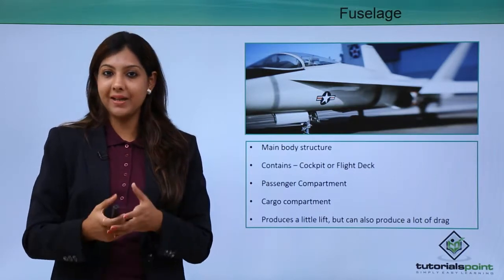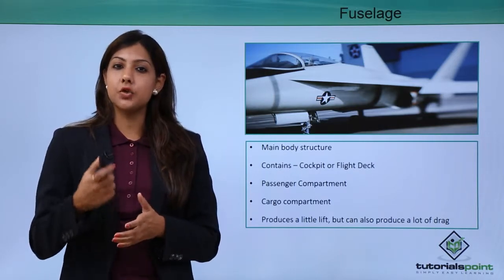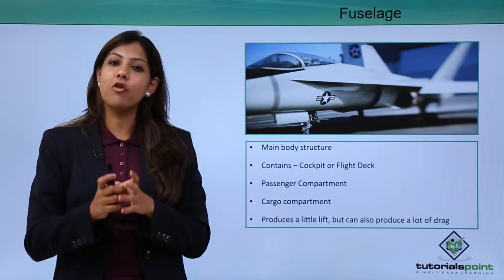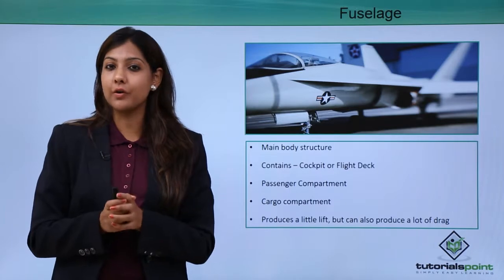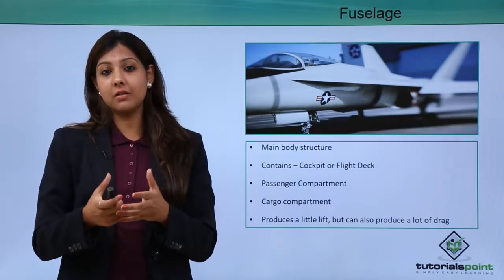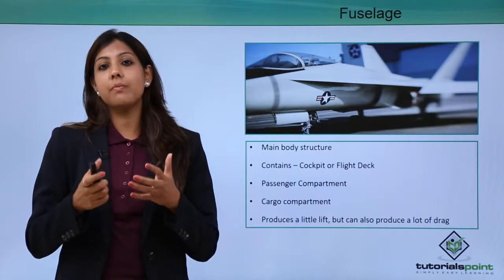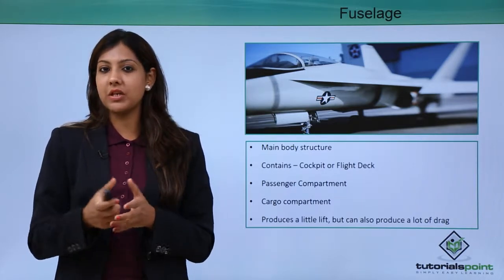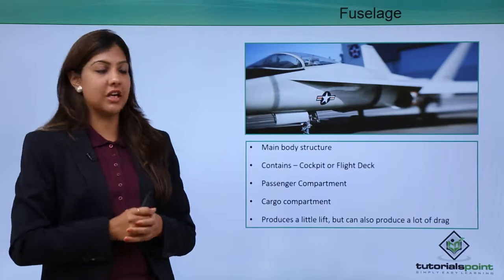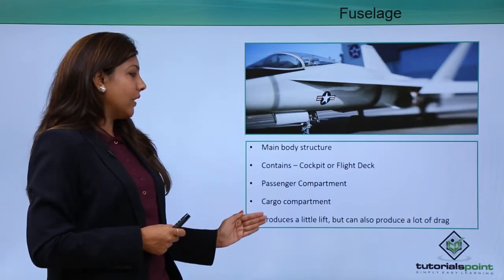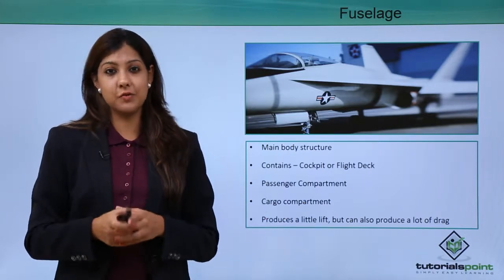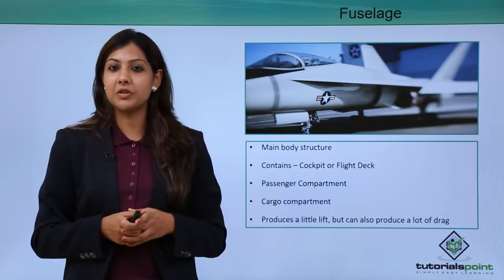In case a passenger wants to carry a pet — like a dog, cat, parrot, or rabbit — all pets are carried in the forward cargo compartment, for the simple reason that it is air-conditioned. Similarly, for living things as well as dead human bodies, if a body has to be carried from one destination to another, it is carried in the forward cargo. The fuselage produces a little lift but can also produce a lot of drag, which is why it is a very essential part of the aircraft.